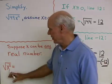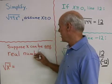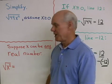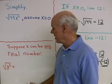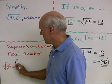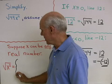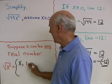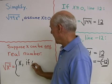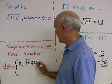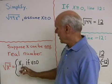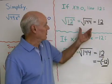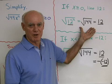I want to summarize this with a definition. Suppose that x can be any real number, positive or negative. How can I write the square root of x²? The square root of x² is going to be just x itself if x is greater than or equal to 0. So when x is a positive number, the square root of x² just comes out to be x — just like we did with the square root of 12 squared.